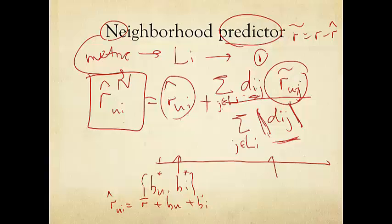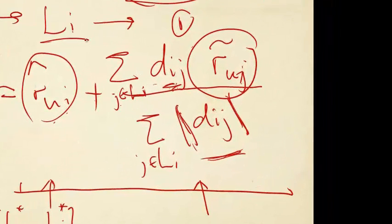The second term in the neighborhood predictor is the actual neighborhood information. Again, we use the cosine coefficient as the metric. Therefore, for each movie i, we define a neighborhood of certain size.